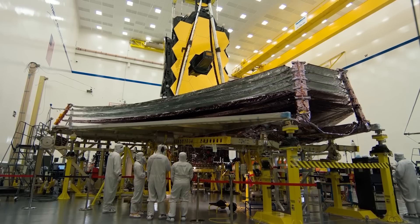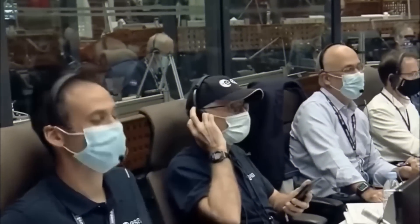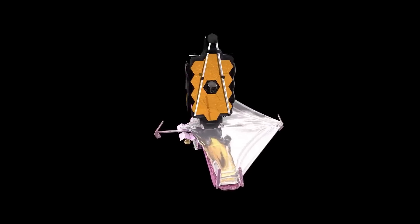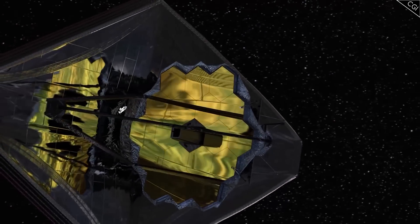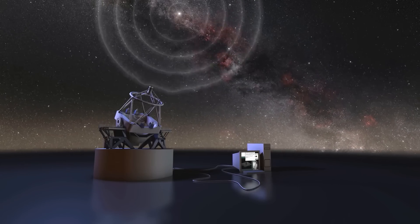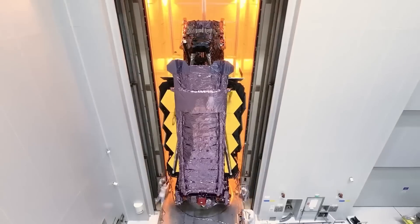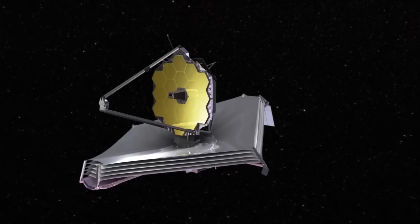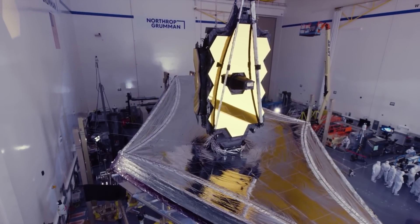As the launch approached, the engineers and scientists involved held their breath, acutely aware of the telescope's vulnerability. Once in space, the JWST would be beyond repair or maintenance—a testament to the immense risks undertaken in the pursuit of knowledge. A million miles away from Earth, the JWST resides in a place where human intervention is virtually impossible. If something were to go awry, there is no possibility of sending a repair crew.